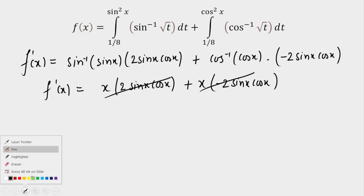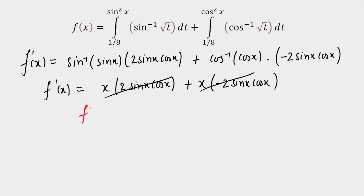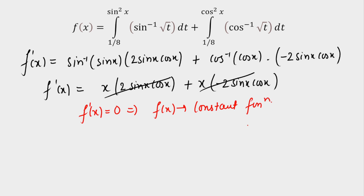From here, f′(x) = 0, which implies f(x) is a constant function. Since f(x) is constant, we can evaluate it at any convenient value of x, which means we can simplify the function very quickly.